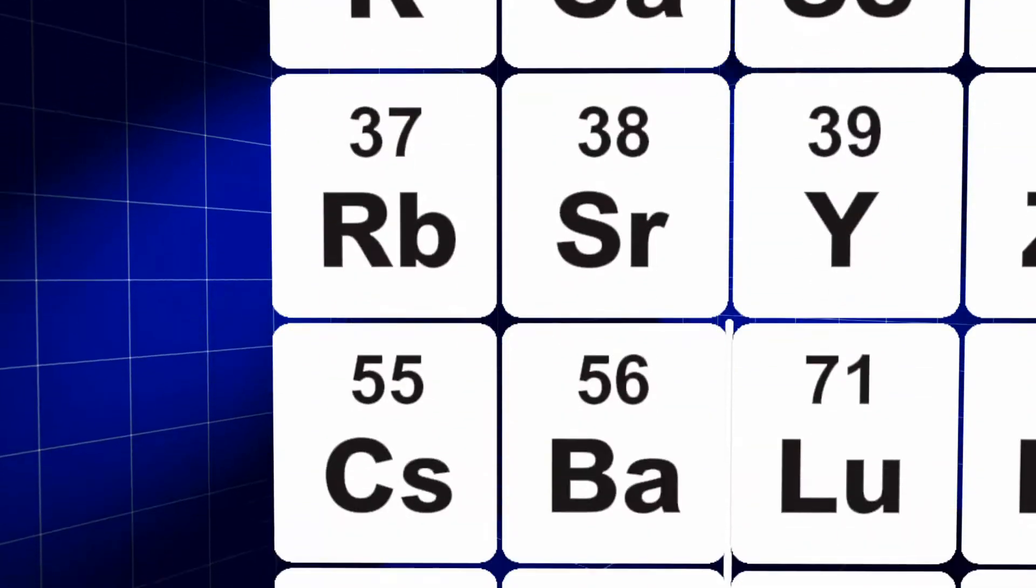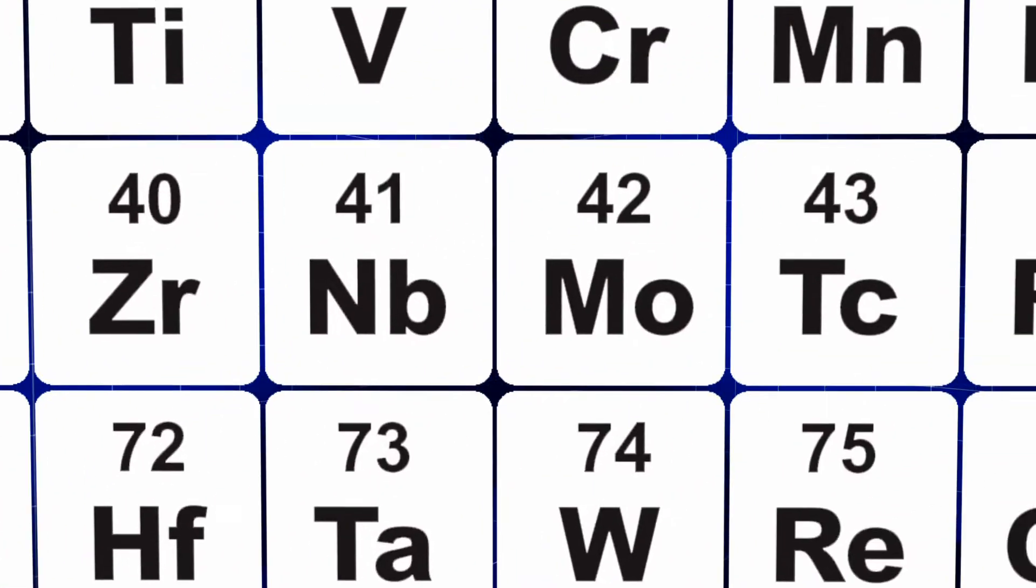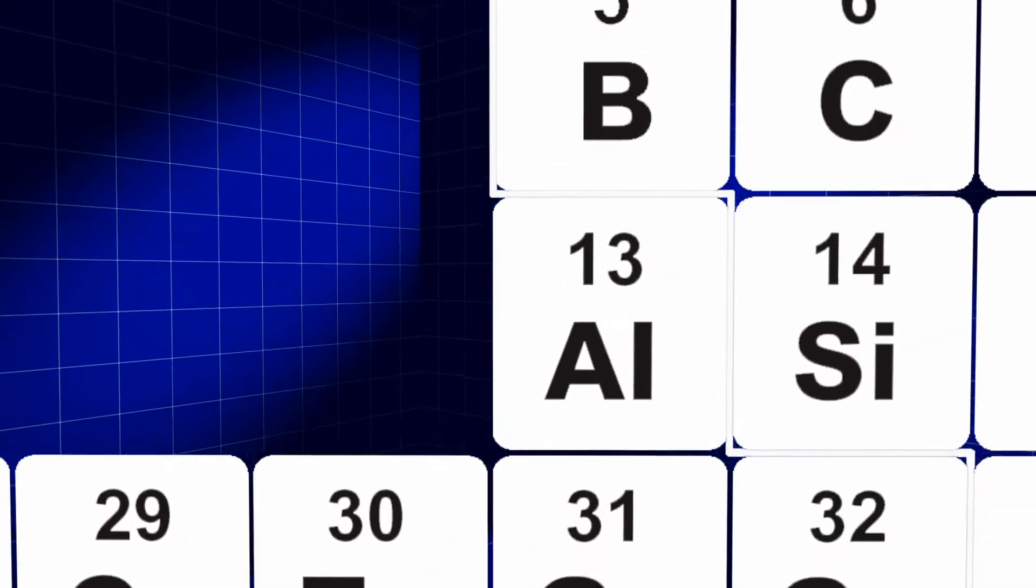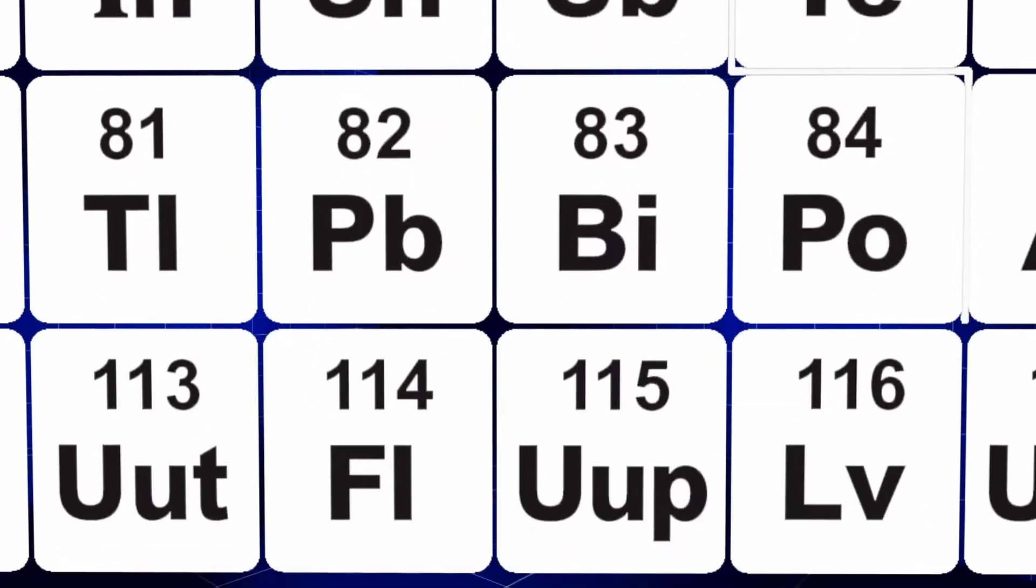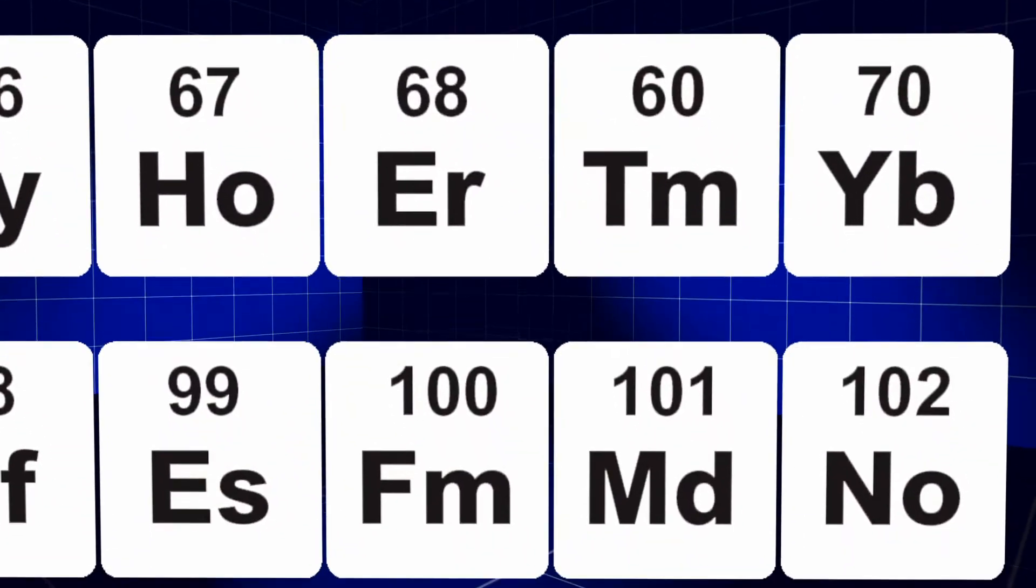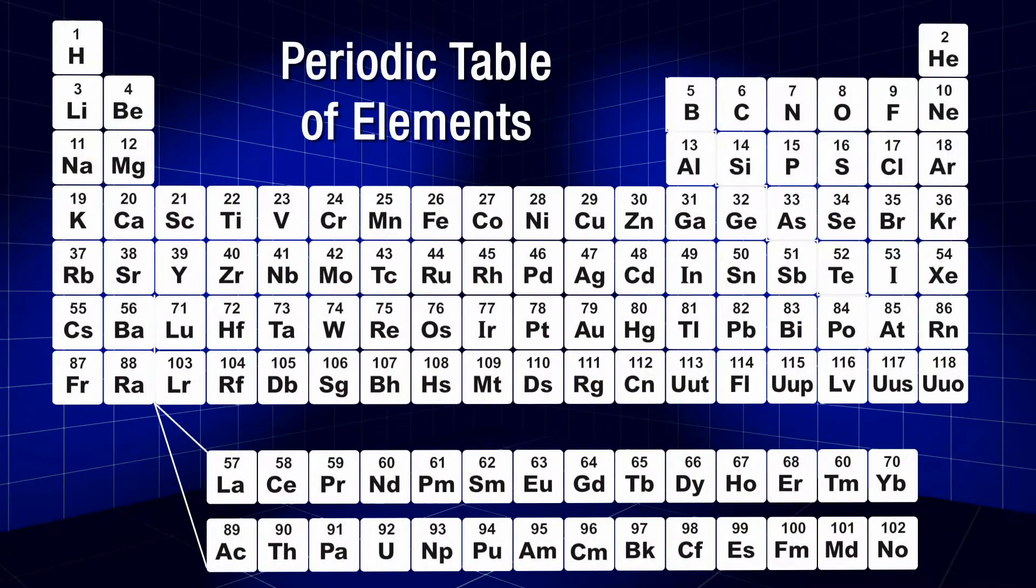The letters and numbers of the periodic table might seem at first like a secret code. And in fact, they are. A secret code that tells us tons of information about the elements in the world around us.